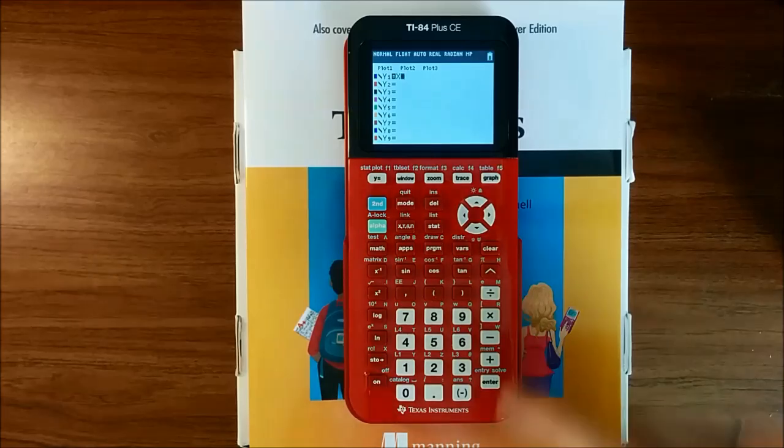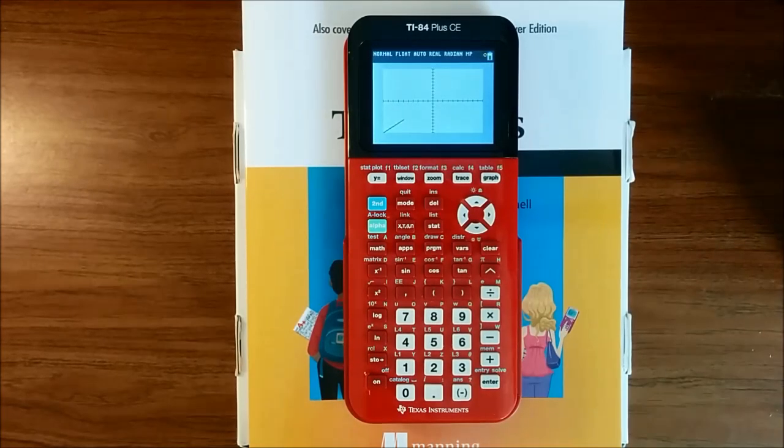Now let's try graphing this equation. We can just press graph, and the calculator will graph the line. You can see it's drawn a blue line going through the origin, with a slope that looks to be about 1, as we'd expect from the line Y equals X.